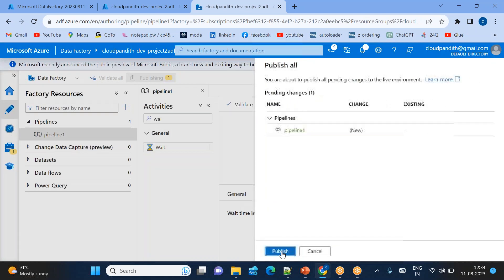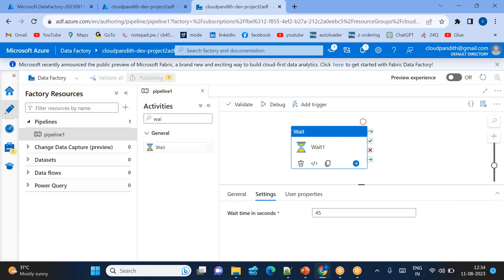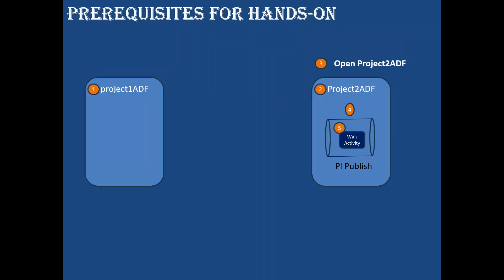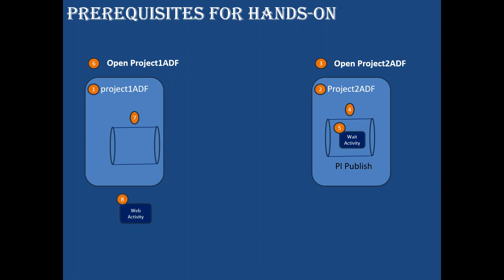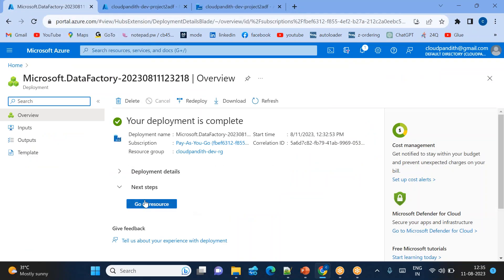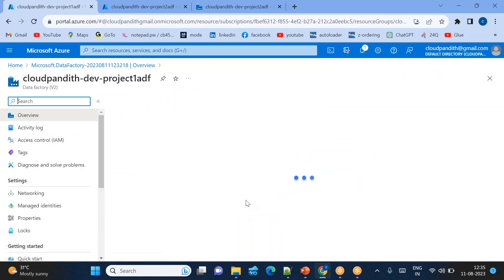Five steps are now complete: open Project 2 ADF, add pipeline, add wait activity with 45 seconds, and publish. Step 6: open Project 1 ADF, add a pipeline, and use the web activity to call the Project 2 pipeline.